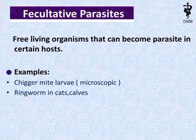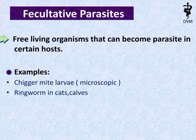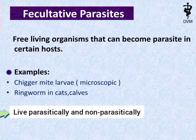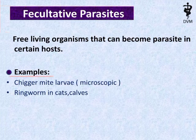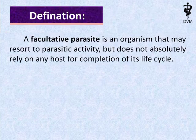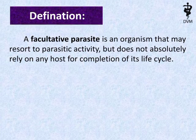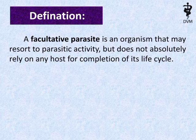Facultative parasites are free-living organisms that can become parasites in certain hosts. It means these parasites are capable of living with or without any host. The definition of a facultative parasite is an organism that may resort to parasitic activity but does not absolutely rely on any host for completion of its life cycle. Examples of facultative parasites include chigger mite larvae, also called red bug, and ringworms in cats and calves.